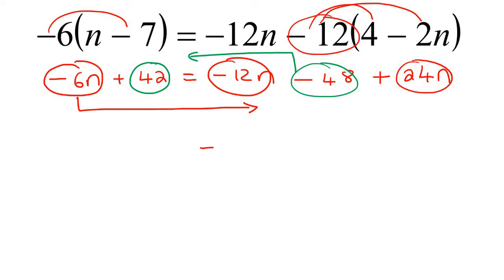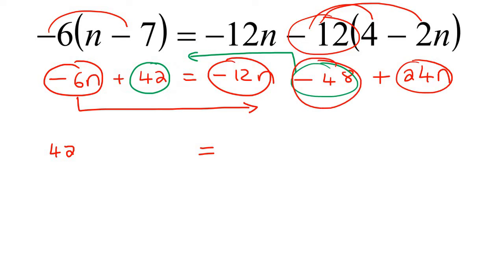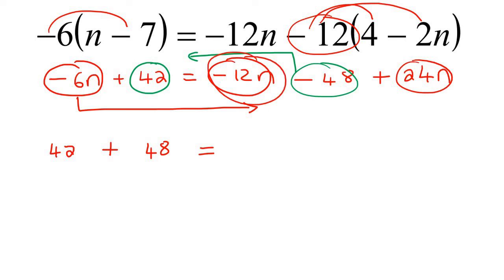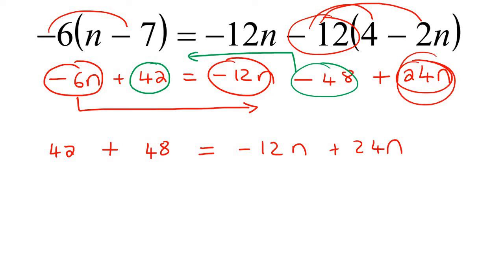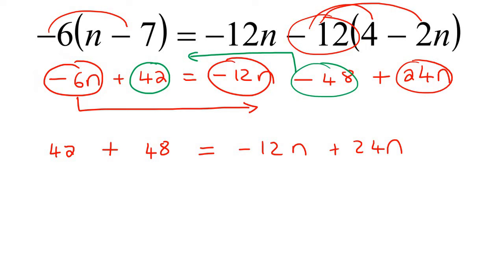On the left-hand side, we already have a 42 — there's nothing happening to that one. And then this negative 48 is going to move over to the left-hand side, but it will become positive 48, because when it moves over the equal sign, the sign changes. Then on the right-hand side, we already have a negative 12n — we'll leave that. We have a positive 24n which is already over there. And then we're going to take this negative 6n and move it over to the right-hand side, so it will end up becoming positive 6n.